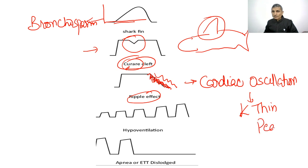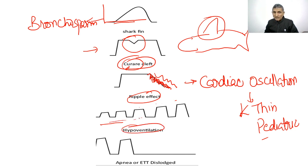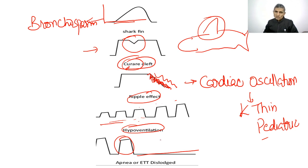When the capnograph height is continuously increasing and the rate is very low, this represents hypoventilation. Apnea appears as a normal graph followed by a straight line, meaning no CO2. This may be due to ventilator failure, tube disconnection, tube kinking, tube dislodgement, or cardiac arrest.